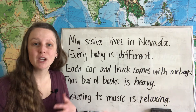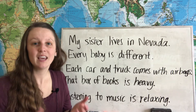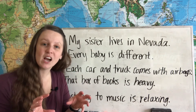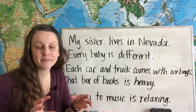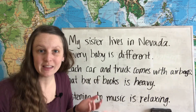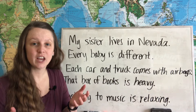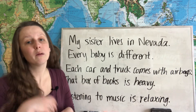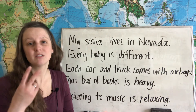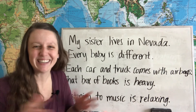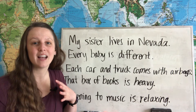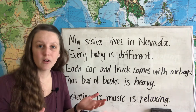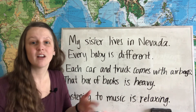Today we're going to talk about subject-verb agreement. In English, the verb of a sentence sometimes changes depending on its subject — depending on who is doing the action. Usually this change is the difference between a singular subject, that's one, or a plural subject, which is two or three or four or many. We're going to look at some of the basic rules for choosing singular or plural verbs based on their subjects.